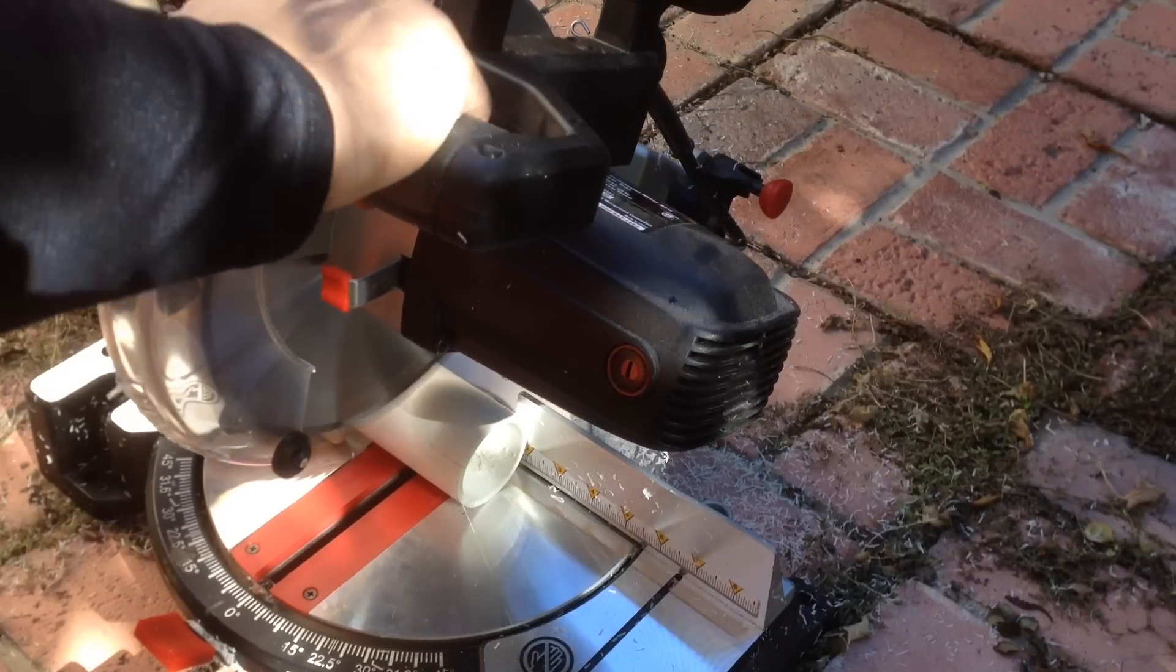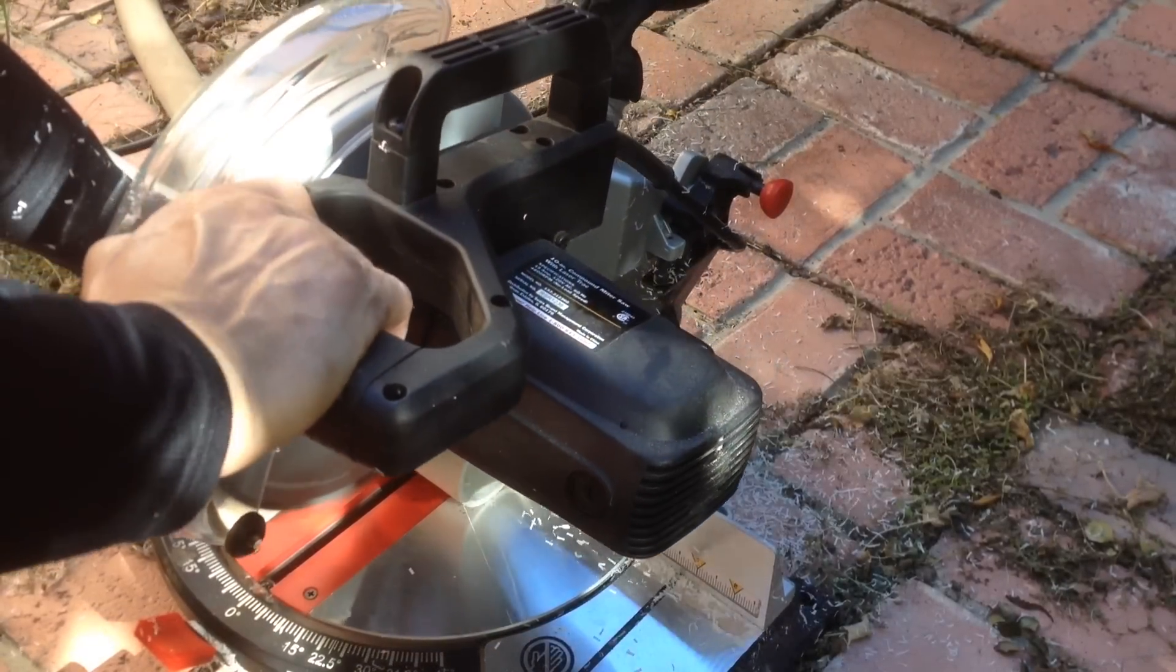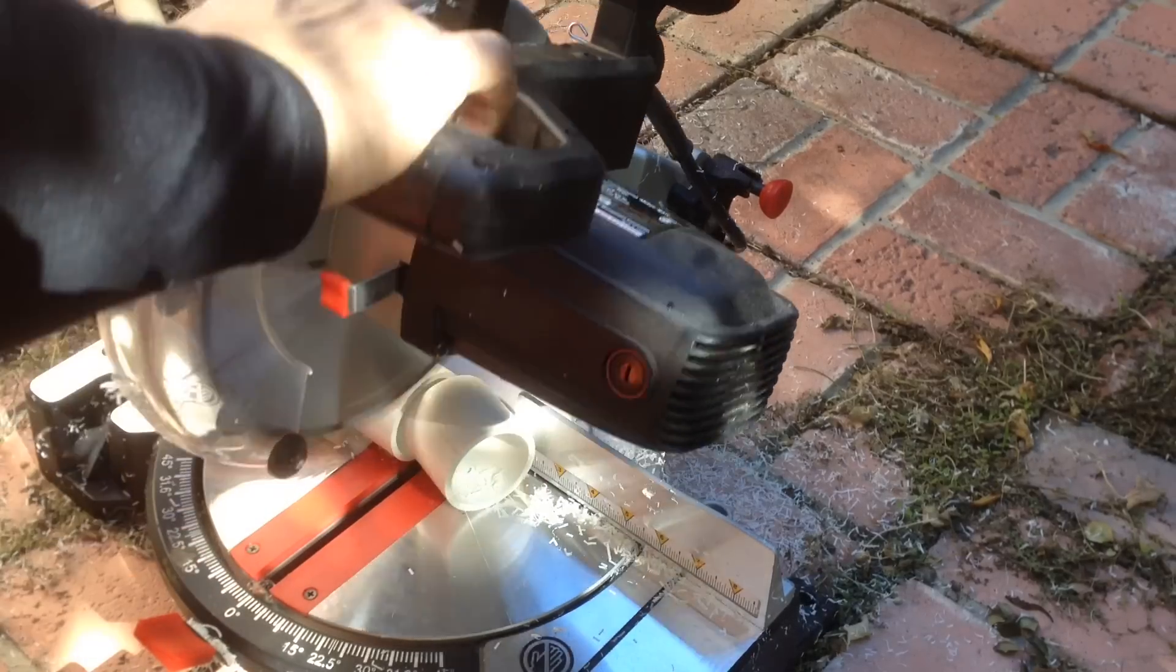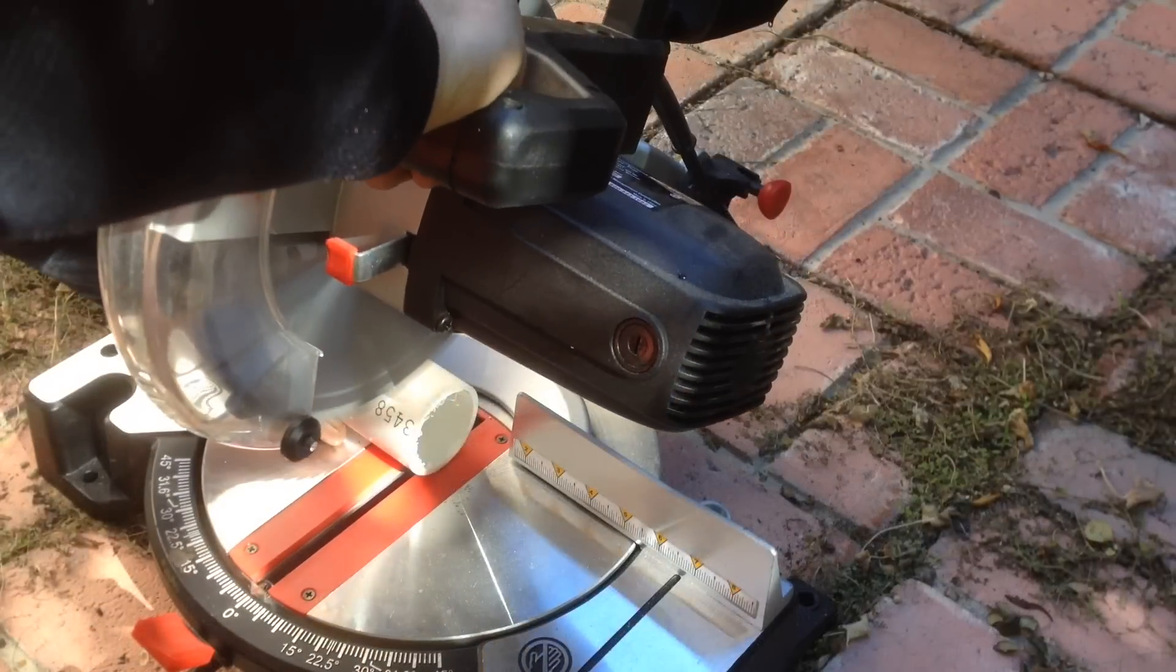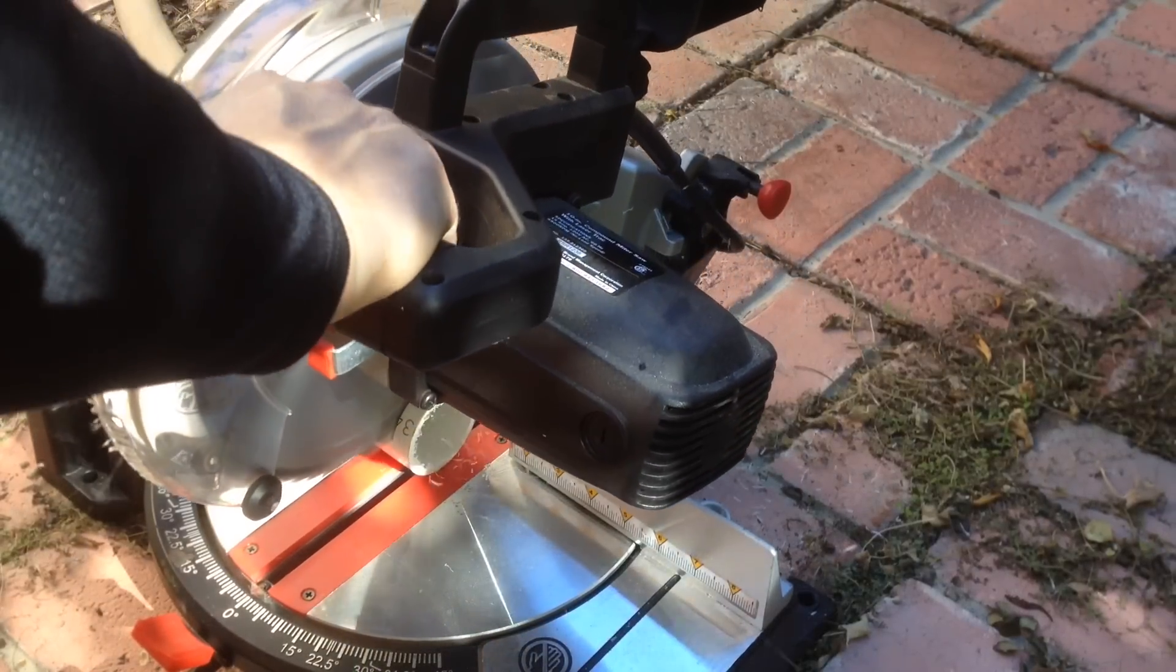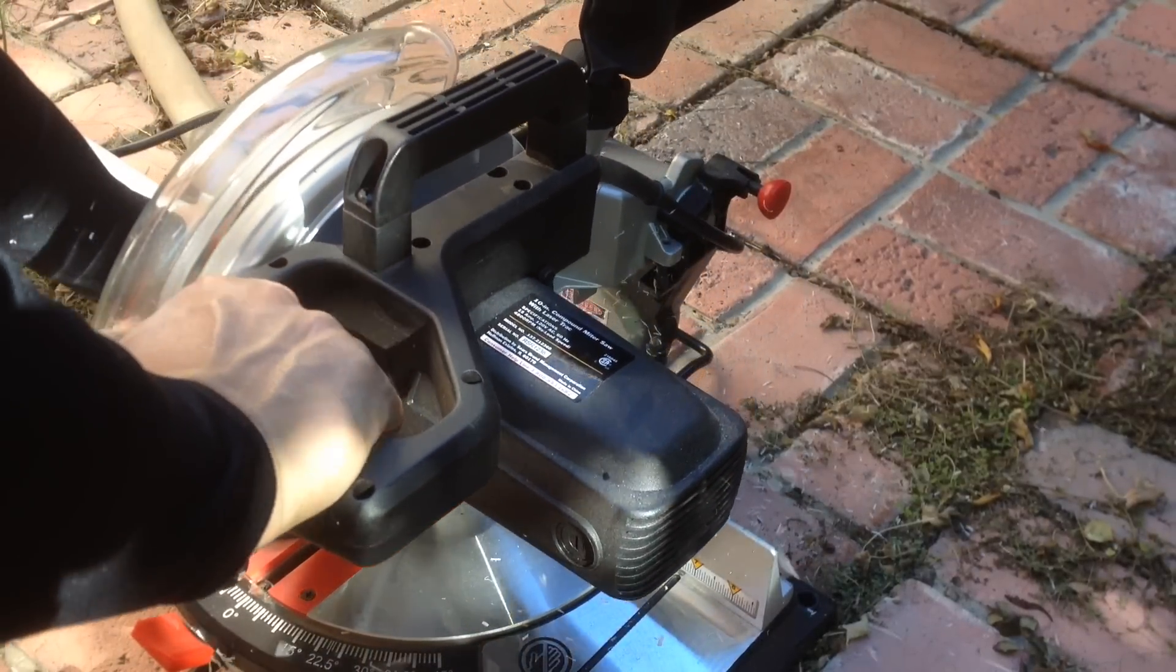Next I'm cutting a 2 inch section of 2 inch PVC pipe. Then I also cut 2 one and a half inch sections of the 2 inch pipe.